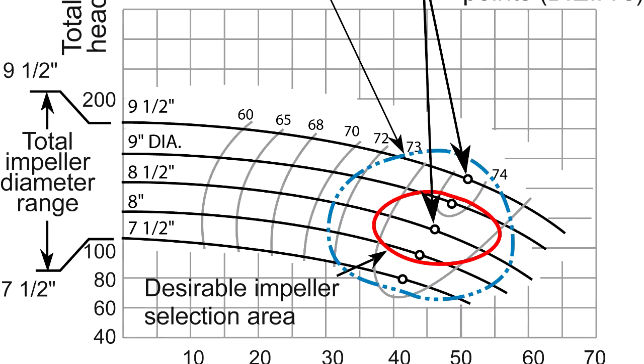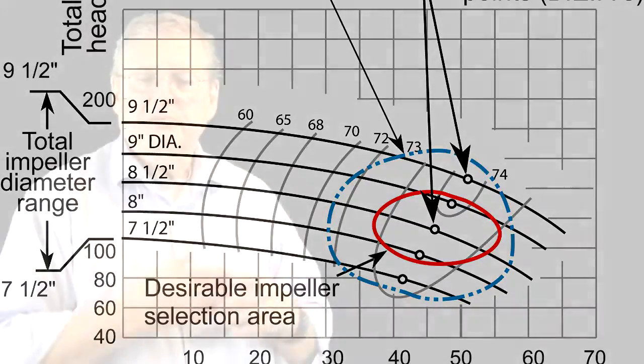Nowadays we're often operating pumps with variable speed drives, so these curves that are showing different impeller sizes would then be curves at different speeds. We get a very convenient ability to change our head and flow by dialing up the speed on the variable speed drive.